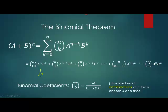If we fast forward to the last term, we have n objects and we're choosing all n of them — again, there's only one way to do that, so this is also equal to 1. a to the 0 power is 1, so the last term is ultimately just the second term in the binomial raised to the n power. So when we expand these binomials, we know what the first term is going to be and what the last term is going to be, and we only really need to use this formula for the terms that come in between.